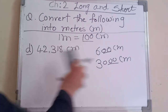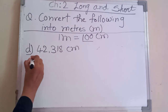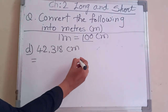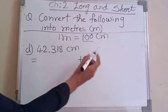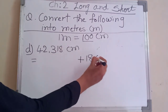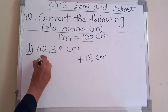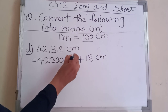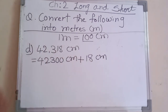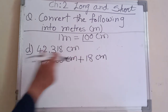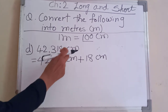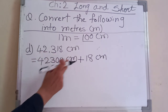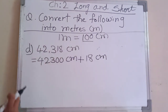So we split the number. Write the equal to sign and put a plus sign to separate eighteen centimeter, replacing those digits with zeros: forty two thousand three hundred centimeter plus eighteen centimeter. When you add these you get forty two thousand three hundred and eighteen centimeter.